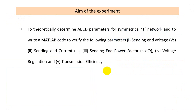Let us go into the lecture without any delay. The aim of the experiment is the same: we have to theoretically evolve the parameters. We have to write the equations for ABCD parameters, which can be directly computed from your receiving end data of a T network. From your ABCD parameters you can evolve the sending end voltage, sending end current, sending end power factor, efficiency, and regulation. After you theoretically evolve all these parameters, you are going to write a simulating MATLAB code to compute all these values.